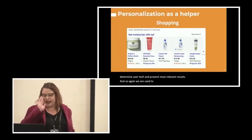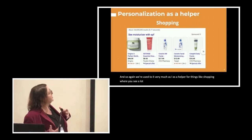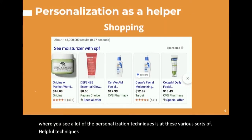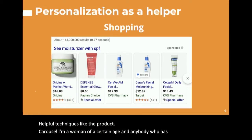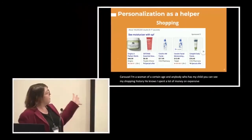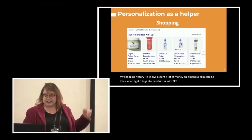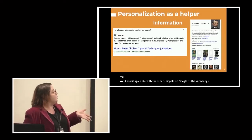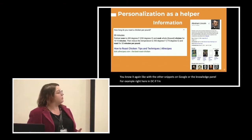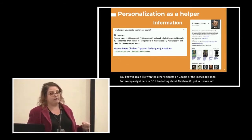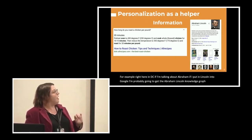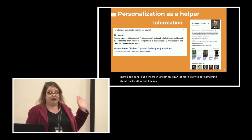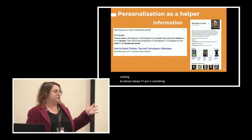We're used to personalization as a helper for things like shopping. For example, the product carousel: I'm a woman of a certain age, and anyone who can see my shopping history knows I spend a lot of money on expensive skincare, so results for moisturizer with SPF are really helpful. Similarly, snippets and the knowledge panel — if I'm in DC and I search 'Lincoln,' I'll likely get the Abraham Lincoln knowledge panel, but in Lincoln, Nebraska, I'd get location-based results. I also use Google a lot for cooking, so searching 'roast chicken' almost always gives me a cooking snippet.